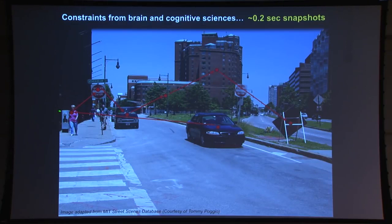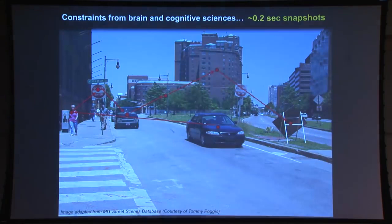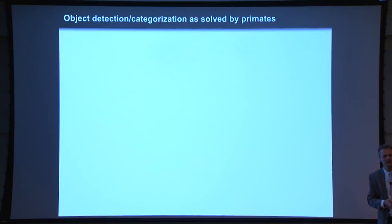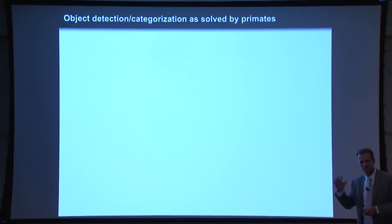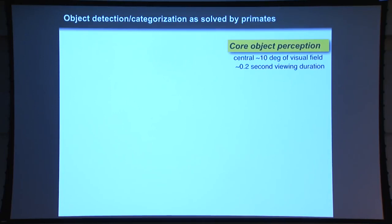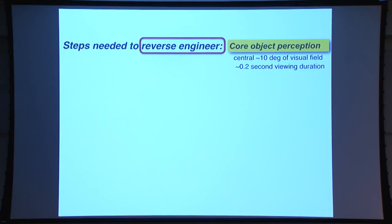What this does is bring a series of snapshots as you sample a scene. You can recognize an object in each one of those images — this highlights what we call core object perception: you can do a lot with just a central 10 degrees in just a couple hundred milliseconds, which is 0.2 seconds — literally a blink of an eye. What I and my colleagues have been focused on since I came to MIT was to reverse engineer that particular problem and build models around it as a stepping stone to more challenging problems.